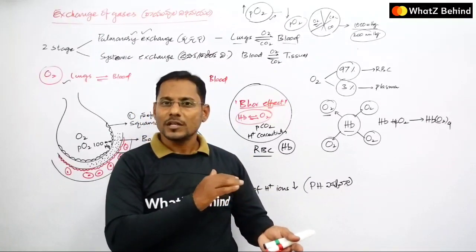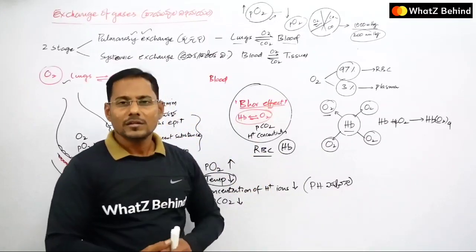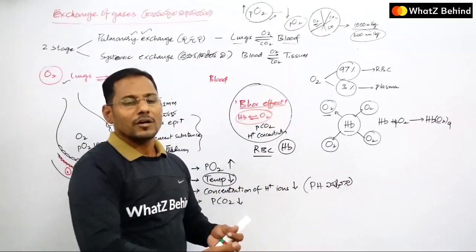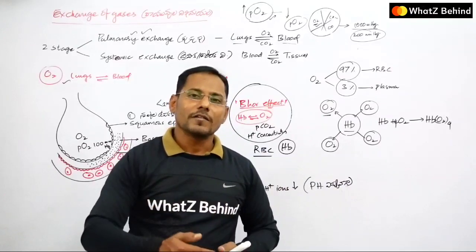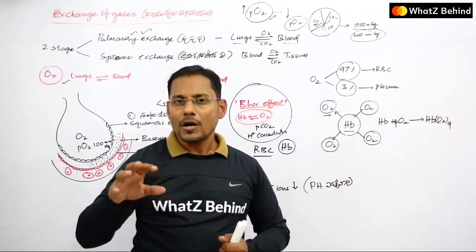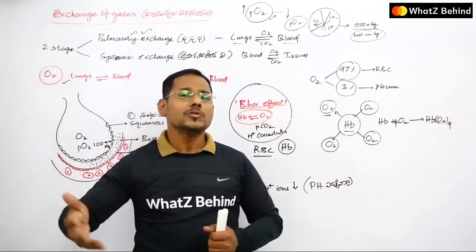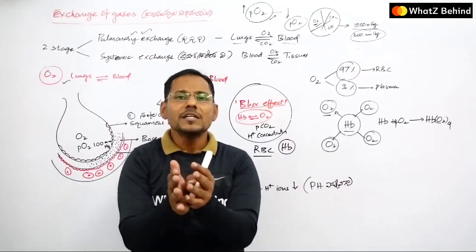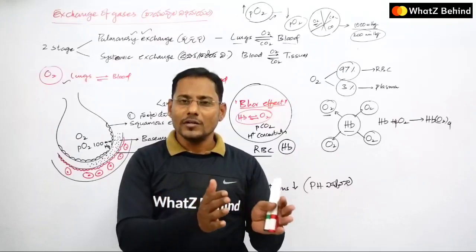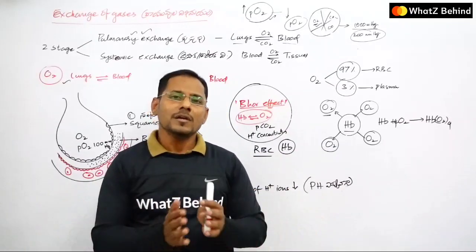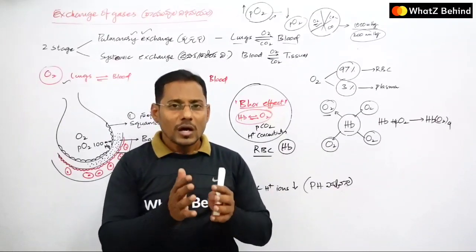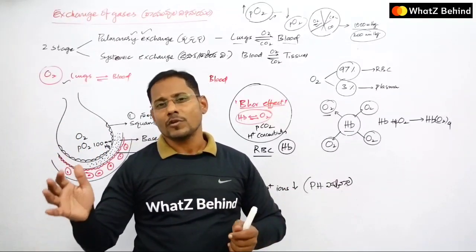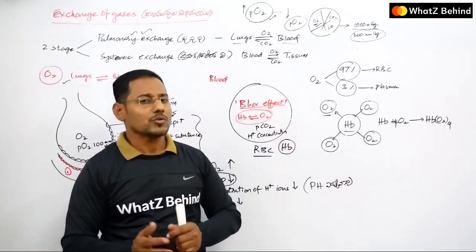When both CO₂ partial pressure and H⁺ concentration are high, the hemoglobin-oxygen bond decreases — this is the Bohr effect. This is how oxygen transportation works. In the tissues, carbon dioxide partial pressure is high, temperature is high, and hydrogen ion concentration is high, so oxygen dissociates from hemoglobin and is released to the tissues.